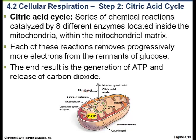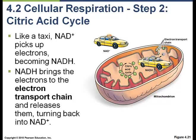The important part of this step is what happens to those electrons — where are they going to go next? This molecule called NAD+ comes into the picture. NAD+ acts like a taxi: it comes and picks up electrons, and when it picks up those electrons it turns into NADH. NADH then transports those electrons to the third step of cellular respiration, which is the electron transport chain.